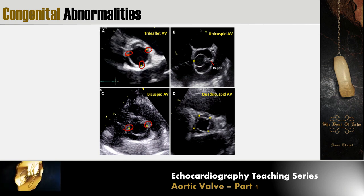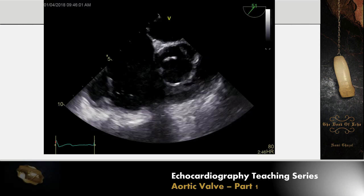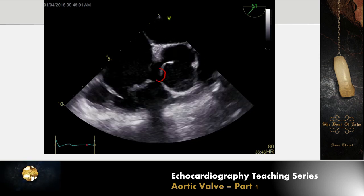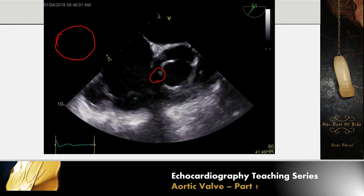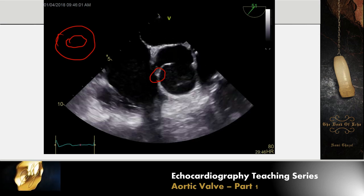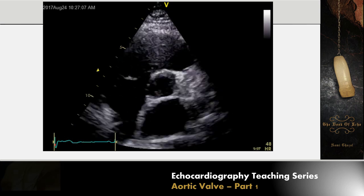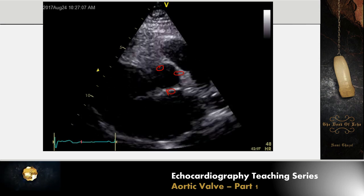In a unicuspid valve, we count only one commissure that fully opens and reaches the annulus — sometimes there are no commissures and the opening is simply the valve orifice. In a quadricuspid aortic valve, counting the fully opened commissures gives four. This is an example of a unicuspid valve where only one commissure fully opens and reaches the aortic annulus. In the quadricuspid example, four commissures are fully opened. So always count the commissures that are fully opened.